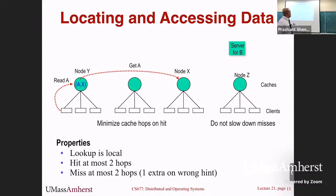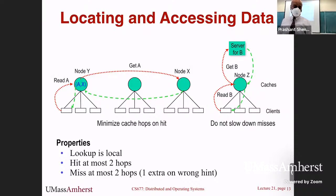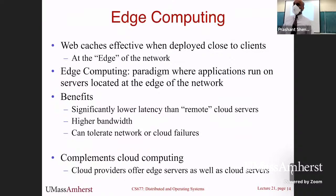That is cooperative caching. The animation shows: you do a read, look it up, go to node X, get the content, and you're done — a remote hit. In another case, you look it up, no one in the system has it, so you get it from the server — a global miss. These are the two stages: local or remote hit served by a proxy, or a global miss served by the server.